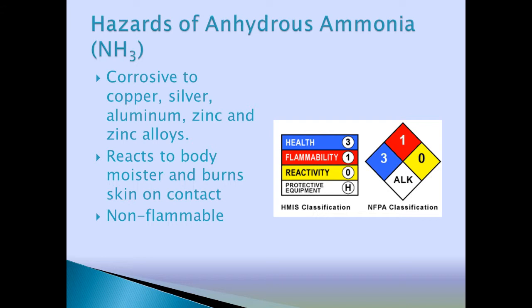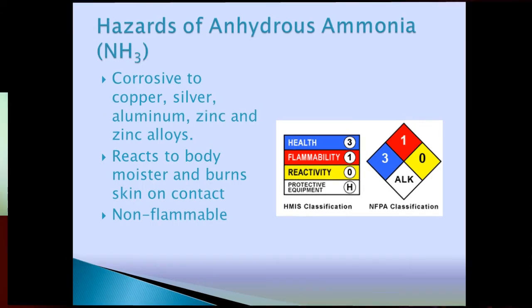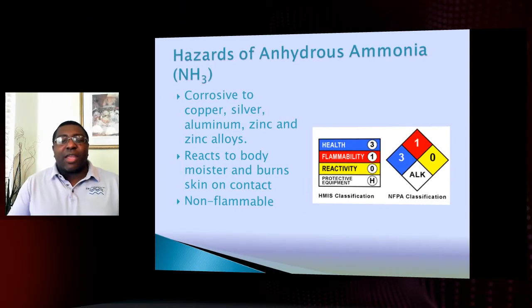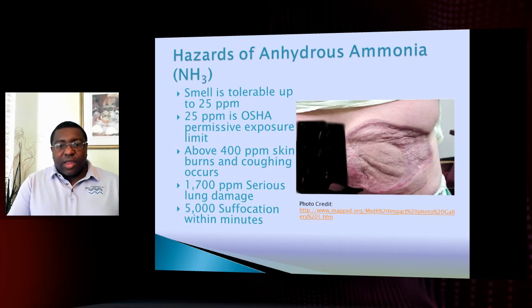On your right is your Hazardous Material Identification System code and then your NFPA — National Fire Prevention Association — classification of anhydrous ammonia. These symbols are going to be changing with the new Globally Harmonized System for classification and labeling of chemicals. What you're seeing here is the current system, but with the new GHS it's going to have new symbols and new ratings.